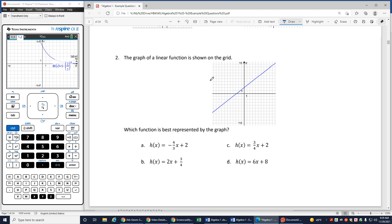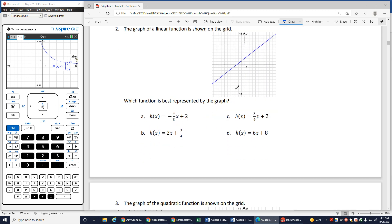Let's look at the next one. Alright. The graph of a linear function is shown on the grid, so I've got just a plain old line. And I want to know which one of these equations is going to make that line. Now if I remember a little bit about algebra, I can remember that I'm crossing my y axis right here at 2.